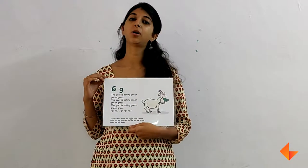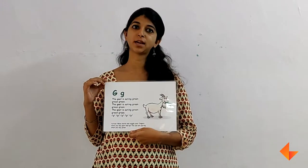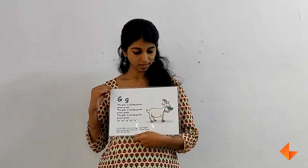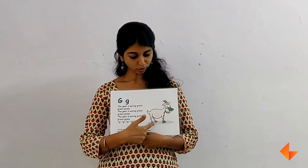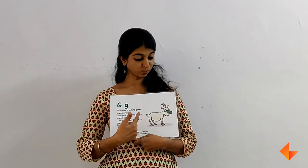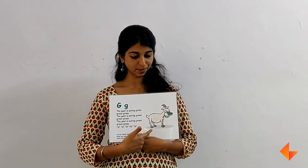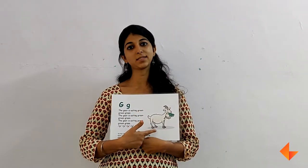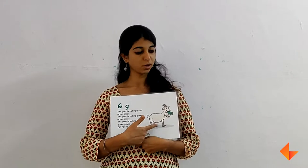Today I will show you how to use the phonics guide to teach the letter G. Start by talking about the picture. Ask children what do they see in the picture. Which animal is this? It is a goat.